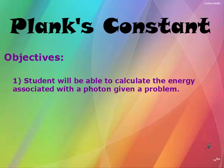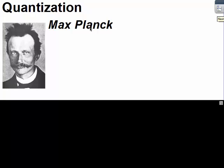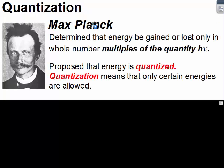Planck's constant. Max Planck determined that energy can be gained or lost only in whole number multiples of the quantity hν. He proposed that energy is quantized. Quantization means that only certain energy levels are allowed — kind of like when we did the demo with the glow-in-the-dark board, where only certain wavelengths were given off.